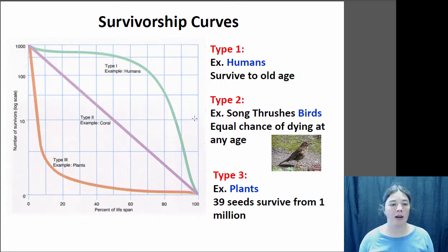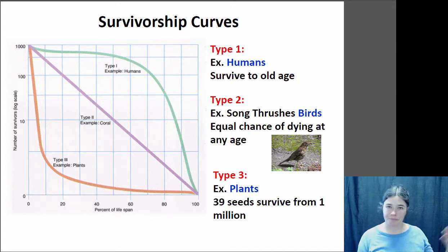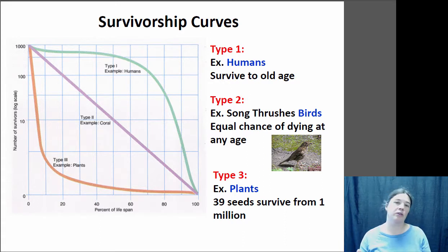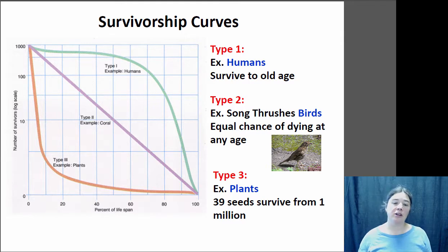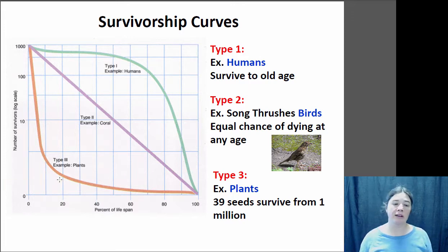A Type 2 survivorship curve shows an equal probability of surviving at any particular age — you have an equal chance of dying between 0 and 1 years as between 1 and 2 years, or 2 and 3 years. Many birds have a Type 2 survivorship curve. Finally, a Type 3 survivorship curve is where most individuals die early in life, but once they pass this early threshold, they have a pretty high chance of surviving for the rest of their lifespan.